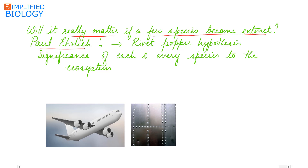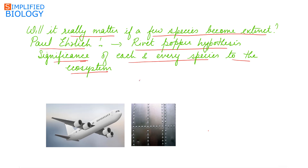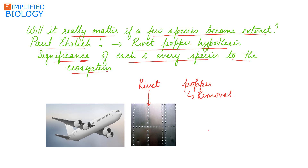Now, will it really matter if a few species become extinct? Paul Ehrlich, a Stanford ecologist, tried to explain it by the Rivet Popper Hypothesis to show the significance of each and every species to the ecosystem. A rivet means the bolts that hold the various parts of an aeroplane together, and 'popper' refers to the removal of those rivets. If a passenger tried to take out a few rivets from a plane, it may not have any immediate effect, but as each and every passenger removes some rivets, it can be deadly because it will loosen all parts of the plane. It also depends on which part the rivets are removed from — if rivets are removed from the wings, that can be a serious threat to the safety of the flight.